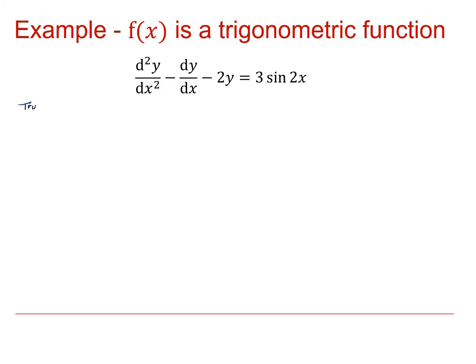We're going to try y equals, well I've got sine 2x's in here, so I'm going to need some sine 2x's. But I do know that when I start differentiating y equals sine 2x, I'm going to get some cos 2x's as well. So I'm going to put both bits in. I'm going to put in an a cos 2x plus b sine 2x.